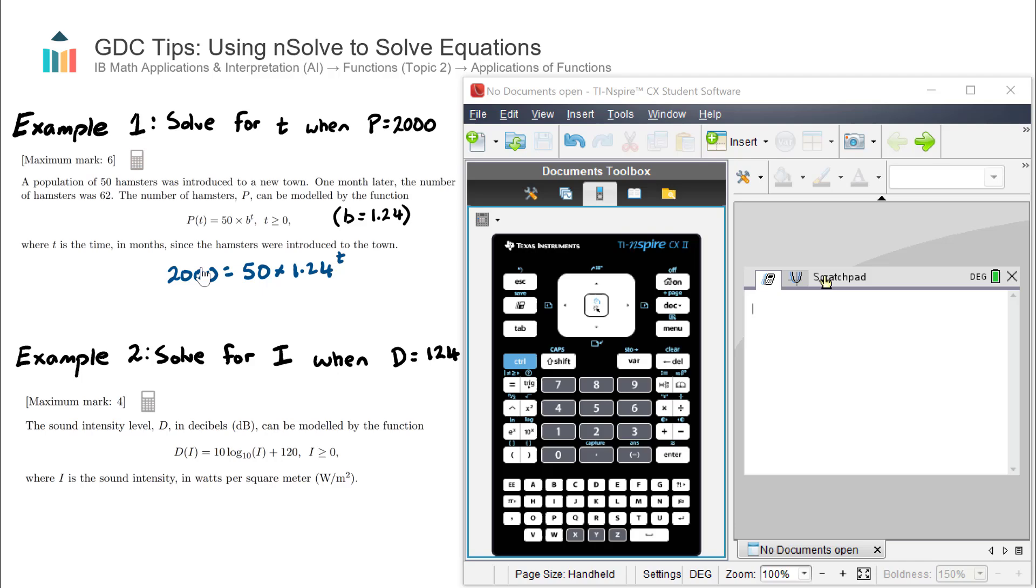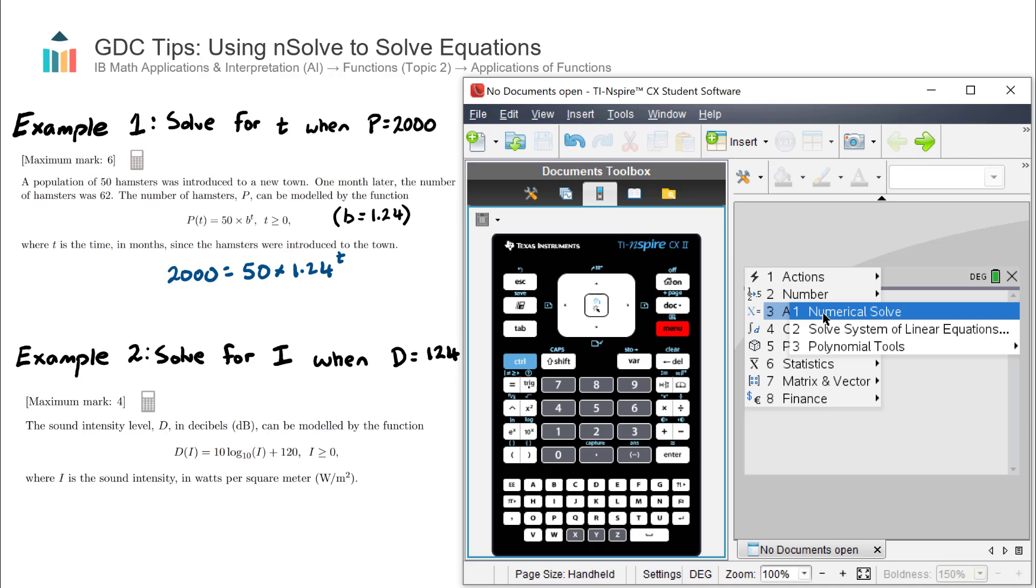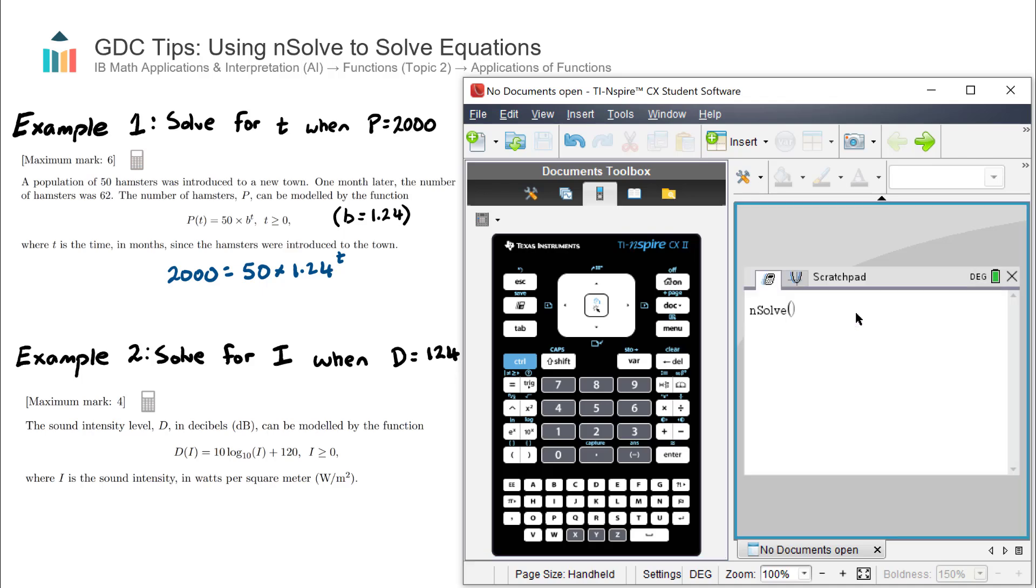We have one equation and one unknown, so we can use numerical solve assuming there is a solution. We find it in menu number 3, algebra, number 1, numerical solve, and then we enter this equation in directly.